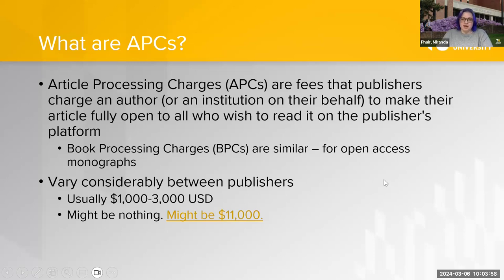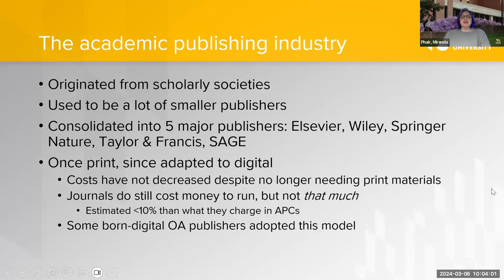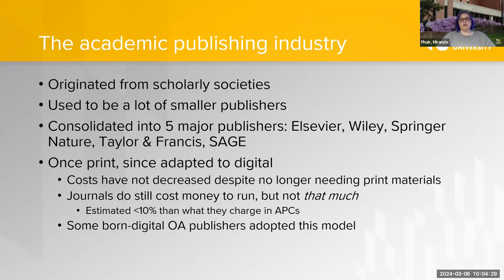That $11,000 figure refers to a Springer Nature journal that was trying to charge 9,500 euros for a single article to make it open access — which is ridiculous, and I like to bring it up because it is. Academic publishing originated from scholarly societies; there used to be many smaller publishers, and while society publishers still exist, most have consolidated into five big major publishers whose journals we read constantly.